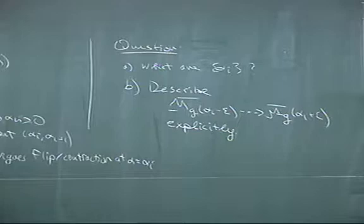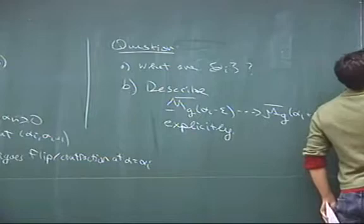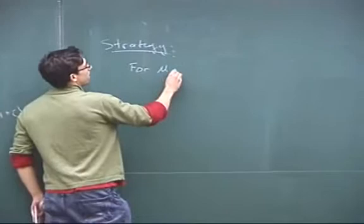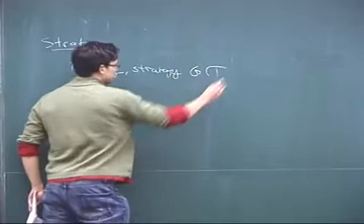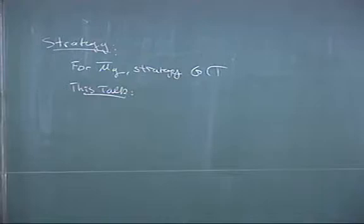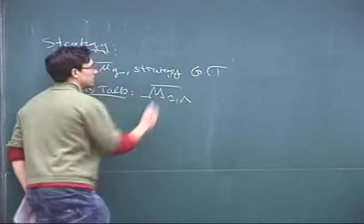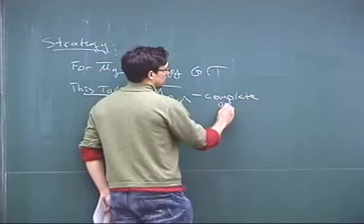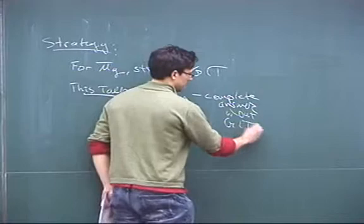For M̄_g, the strategy is evidently GIT. What I'm going to do in this talk is something a little different. I'll basically answer these questions completely in the special case of M_{1,n} bar. In this special case, I'll give you a complete answer to these questions without GIT. It's kind of a miracle that this works out.